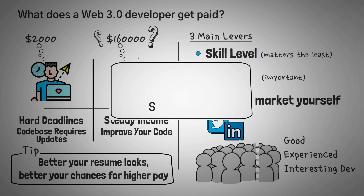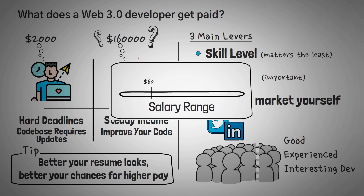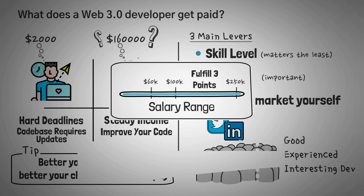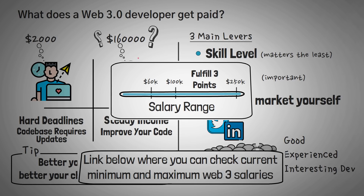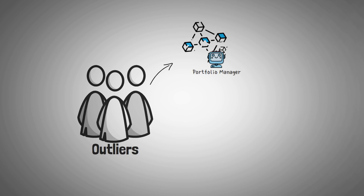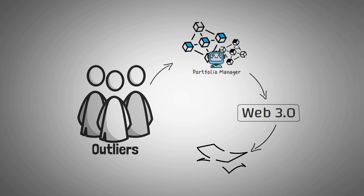It's fairly easy to get a $60,000 a year job in the world of Web3. An average Web3 job usually pays around $100,000 a year, and if you nail all three points — skills, portfolio, and self-marketing — you could score yourself a $250,000 a year job. There are also outliers who develop their own tools or protocols as entrepreneurs, and those people can earn millions of dollars per year.